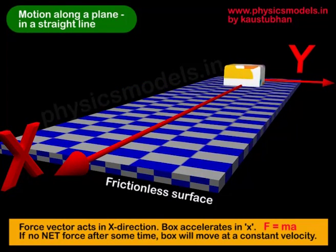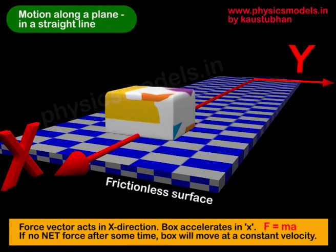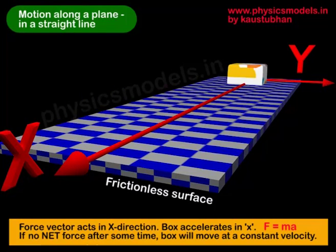So the plane itself is the checkered board, a frictionless surface, and we can define any plane by two mutually perpendicular axes. In this case, it's shown as x and y.